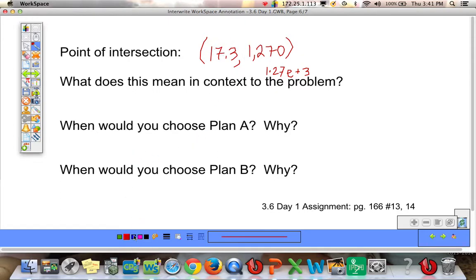So remember, the independent variable is the number of months. And then this is the amount of money. So what does this mean in context of the problem? Well, the point of intersection is when they both, you've spent the same amount of money for both. So what this means is after 17.3 months, so before two years is up, you've spent the same amount on the phone and the phone plan for each phone.